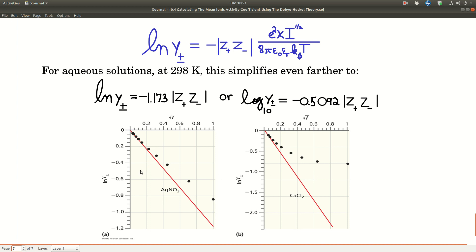These graphs show how good the Debye-Huckel theory is. They're graphing the natural log of the mean ionic activity coefficient versus the square root of I. This is an equation of a straight line, y equals mx, with the y-intercept zero. All this stuff except the square root of I is the slope.